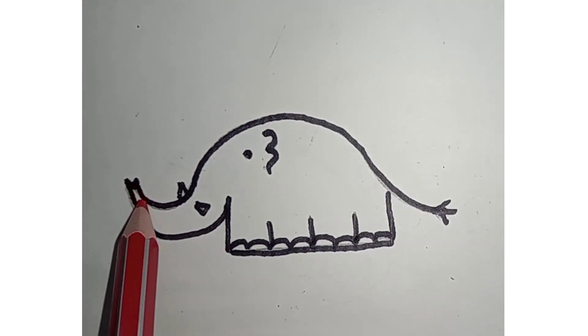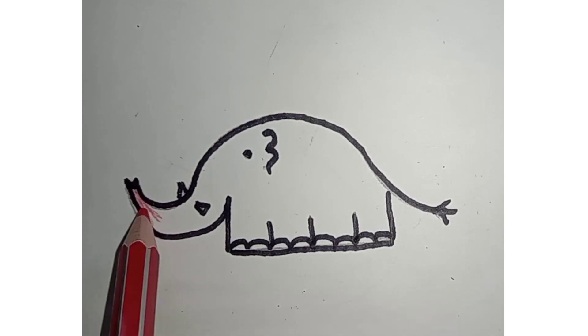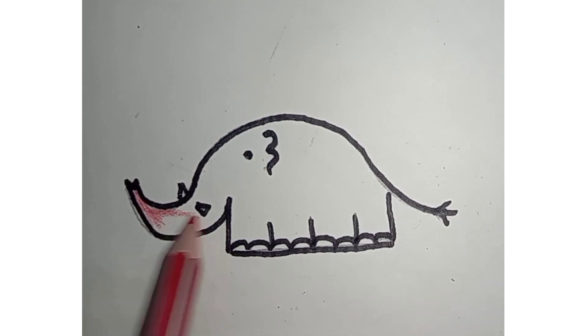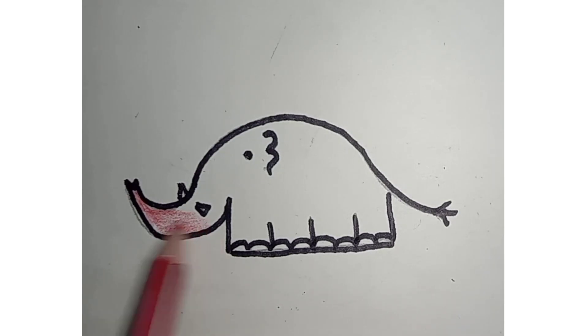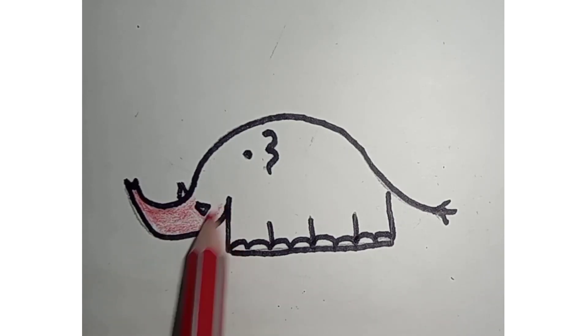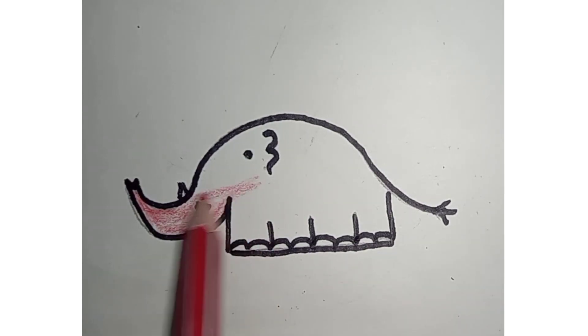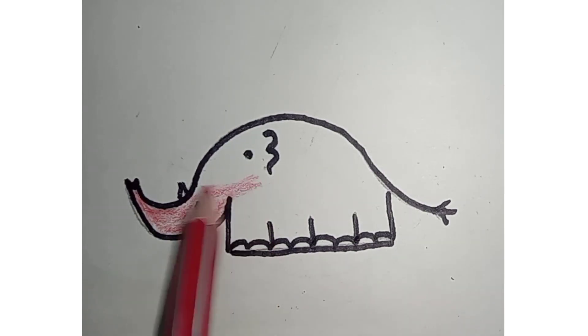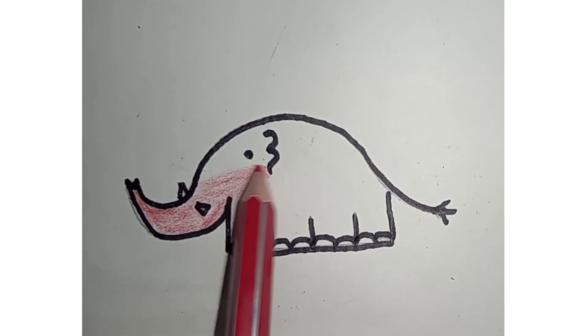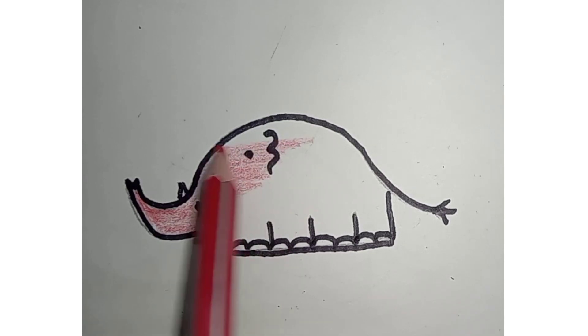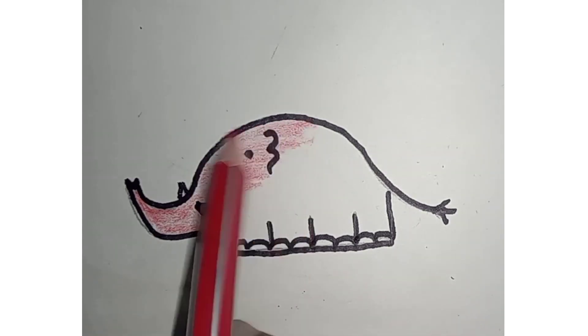Yes. Let's color this. Slowly, slowly we have to start coloring from the trunk. Because it is very detailed place. Right? Small place. So we can start coloring from there. And slowly we can move to the head.